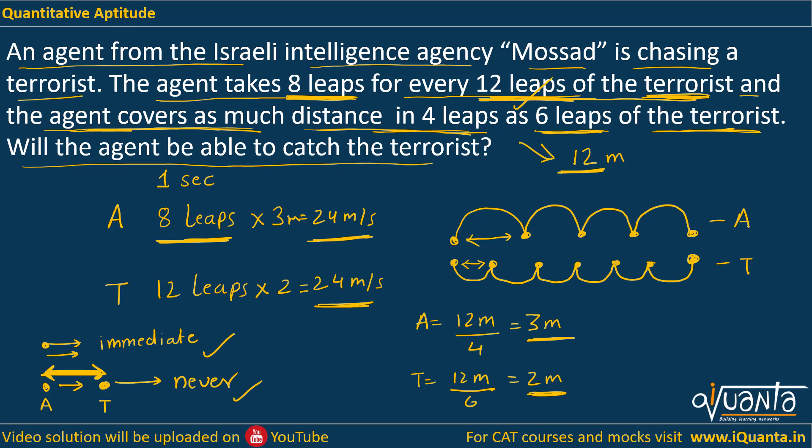Either the agent will immediately catch the terrorist, or he will never be able to catch him. So we cannot determine. Hence the answer will be 'cannot be determined' (CBD). This is the correct answer. I hope the explanation is clear. If there is any doubt, please comment. Thank you.